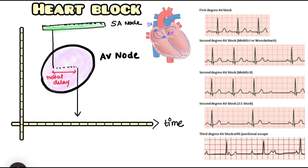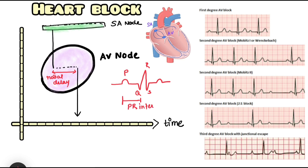This AV nodal delay can be appreciated on an ECG. The AV nodal delay on an ECG is represented by the PR interval. The ECG shows a P wave and then comes the QRS complex. The P wave represents atrial depolarization, and the QRS complex represents ventricular depolarization. The time duration between those two — the isoelectric part, that is the PR interval — is significant of the AV nodal delay. A normal PR interval is anything less than 0.2 seconds.